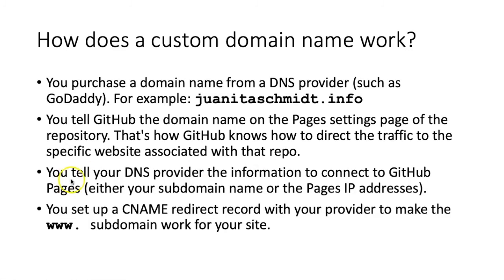Then you need to go on the other end to the DNS provider and tell it that it should send requests for web pages to GitHub Pages, either through your subdomain name like bascoff.github.io or through a series of GitHub Pages IP addresses found on the instructions page. If you want your website to use both the straight domain name or the domain name with www in front of it, you also have to set up a CNAME redirect record with your provider. So it's a little bit complicated, but once you get it set up it doesn't matter what your account name or repository name is, because your custom domain name will be substituted for both.